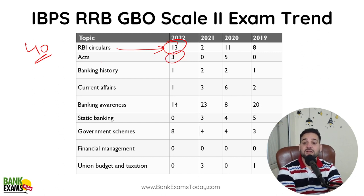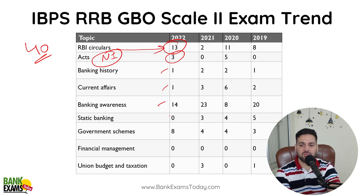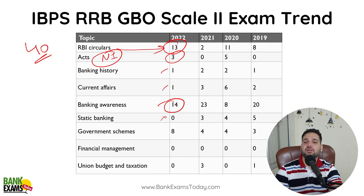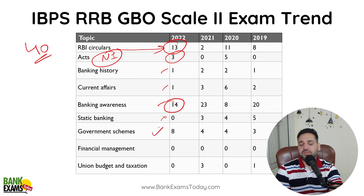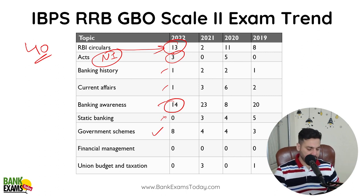Various acts — from which acts? Mostly questions come from the Negotiable Instrument Act here. Banking history, current affairs, banking awareness, start-tech banking — very few questions from there. Banking awareness from the last 6 months, RBI Circulars from the last 1 year. Government schemes — various government schemes related to banking, women empowerment, insurance schemes — such schemes come in the exam.